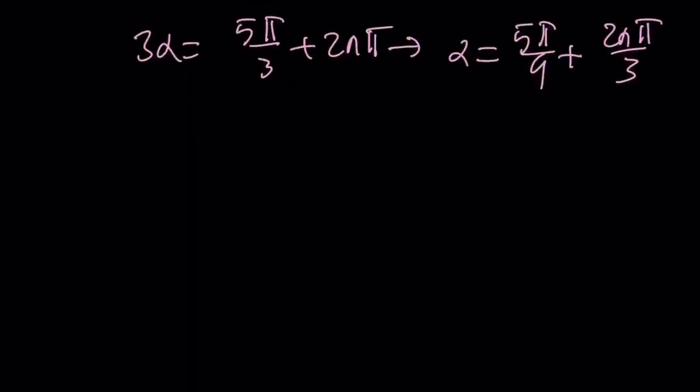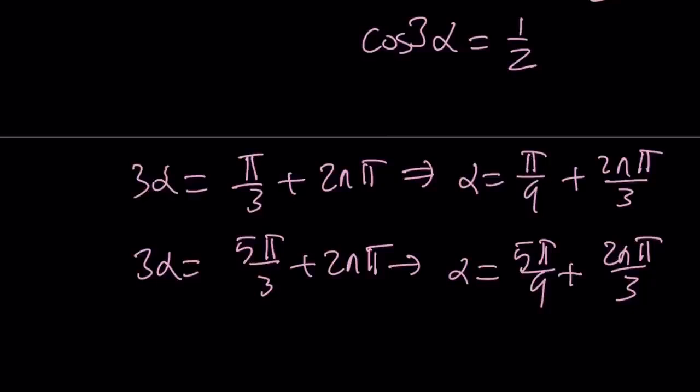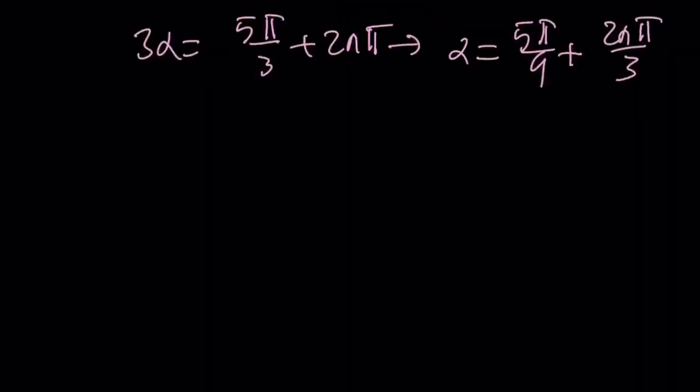So from here, basically, we're going to get the following values, right? And remember, the solutions are going to be, u is going to be cos(α). So let's go ahead and find the u values.